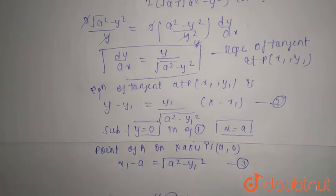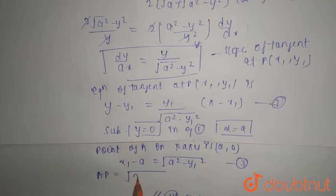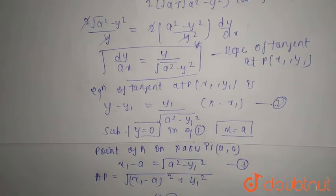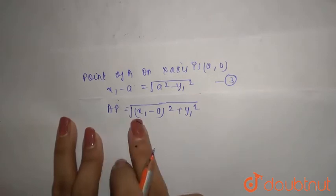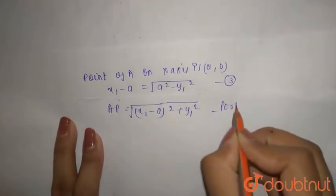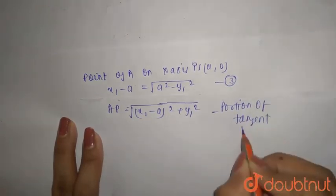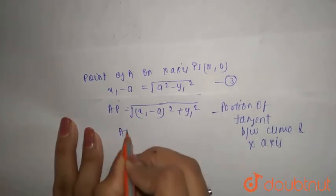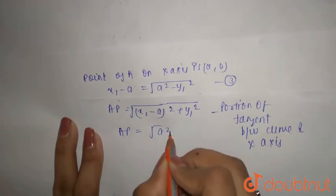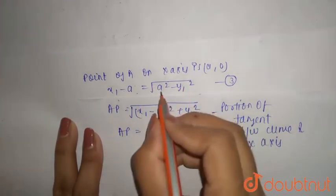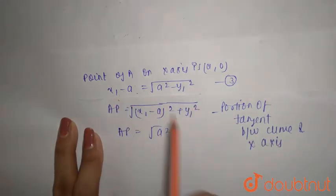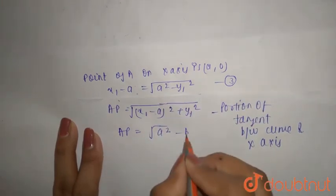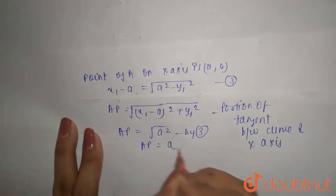Now the portion of the tangent between the curve and the x-axis is AP, which equals root of (x₁ - a)² + y₁². From equation 3, x₁ - a equals root(a² - y₁²), so (x₁ - a)² = a² - y₁². Substituting, AP = root of (a² - y₁² + y₁²) = root(a²) = a. So AP = a.